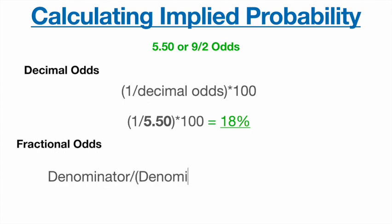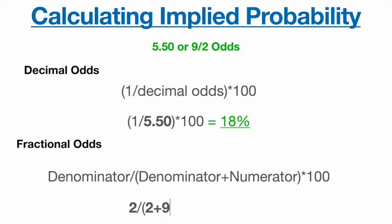For fractional odds, you do the denominator divided by the denominator plus the numerator, times 100 — like going back to school with all this denominator and numerator stuff. So that looks like: 2 divided by (2 plus 9), times 100, which again gives us 18%. No matter whether you're looking at decimal or fractional odds, it's the same calculation.